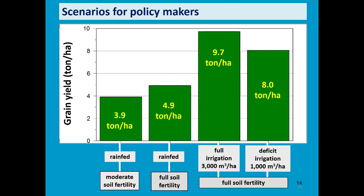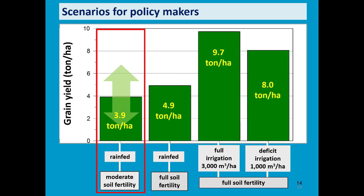Here we see the results of a lot of simulations. Under the current condition of rain-fed agriculture with moderate soil fertility, the yield is close to 4 tons. In a rainy year it might be above 6 tons, but in a dry year less than 2 tons per hectare.